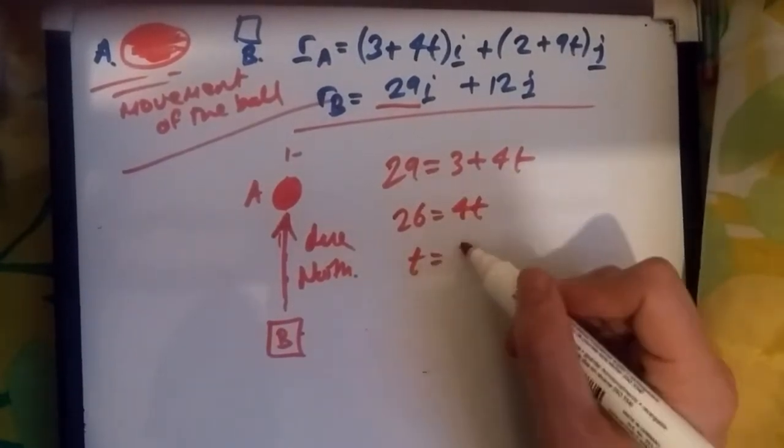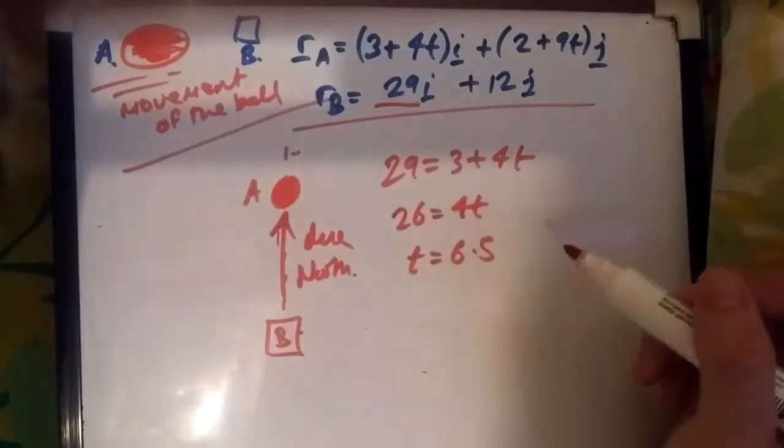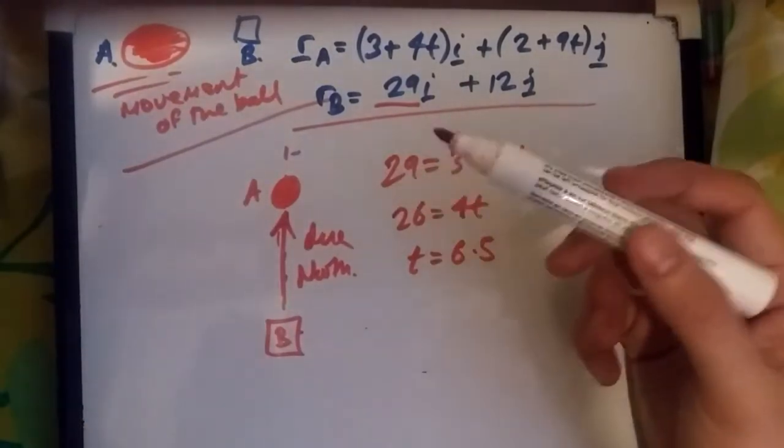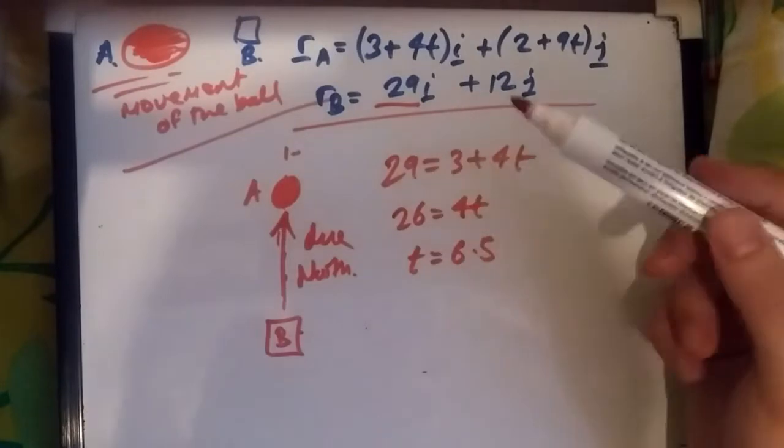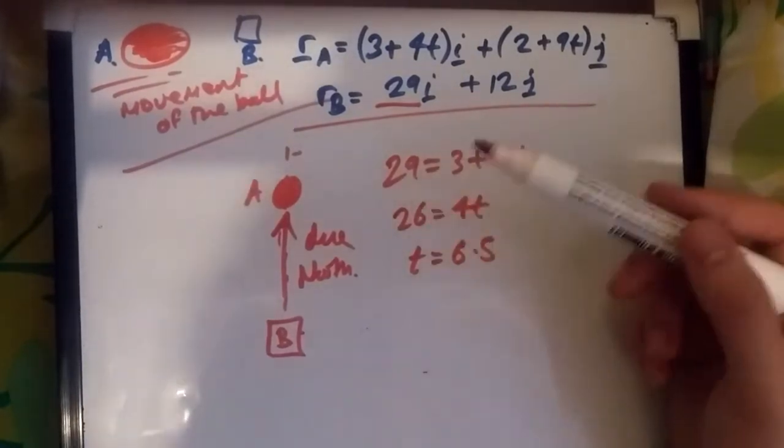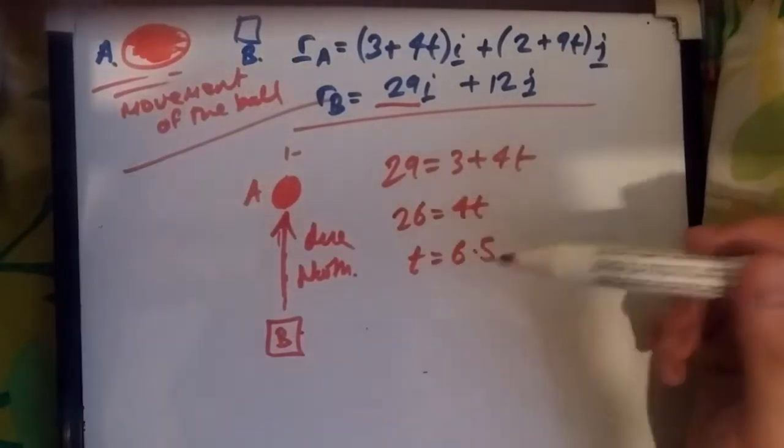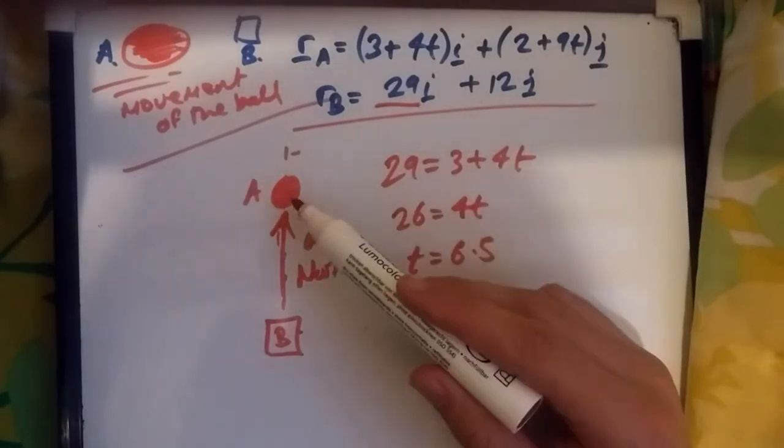So suppose this was in seconds because I don't, I can't picture the ball moving at 6.5 hours to get to one place. I had to go travel around the whole world and stuff. But yeah, so this would be the value t at this point.